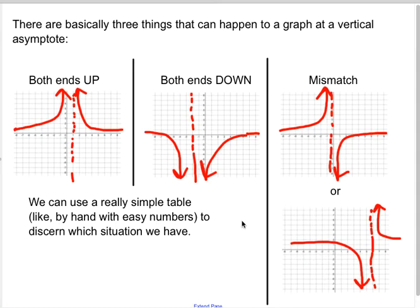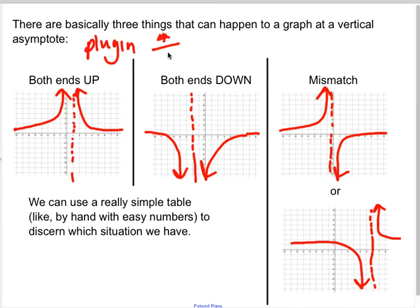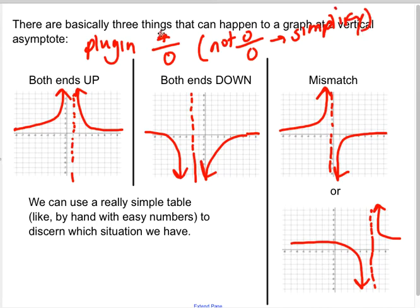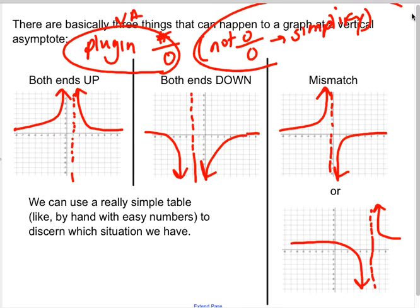If we spot that something has a vertical asymptote, we can use a really simple table — not a calculator table with horrible decimals, but a really straightforward table with nice easy numbers — to determine which of these situations we have. The big hint that it's a vertical asymptote is if you plug in and get a number on top of zero — not zero over zero. Zero over zero is code to simplify. But if you plug in and get a number on top of zero, like five over zero or negative 57 over zero, that's going to be a vertical asymptote.